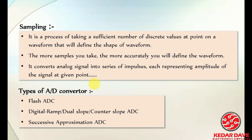The first important step in the overall process is sampling. We take samples at several time intervals of the signal, and from those samples we can reconstruct the overall signal at the output. The more samples you take, the more accurately you define the waveform. The analog signal is converted into a series of impulses, each representing the amplitude of the signal at a given point.